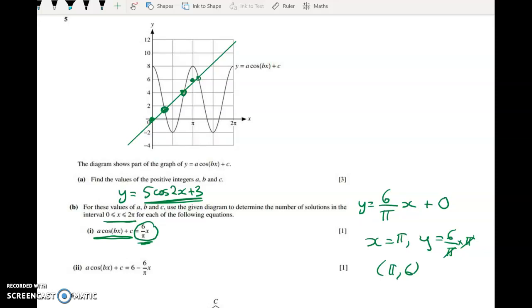One, oh no, not one sorry. One, two, three. We really need a different colour pen for the intersections. Let's do that. So one, two, three. There are three solutions.